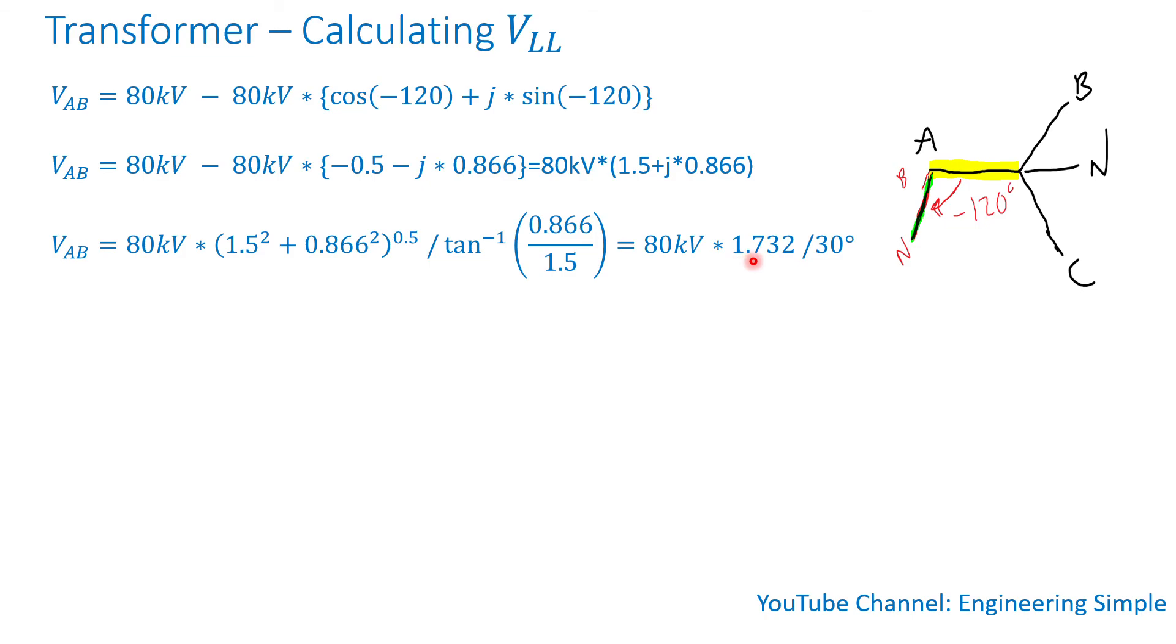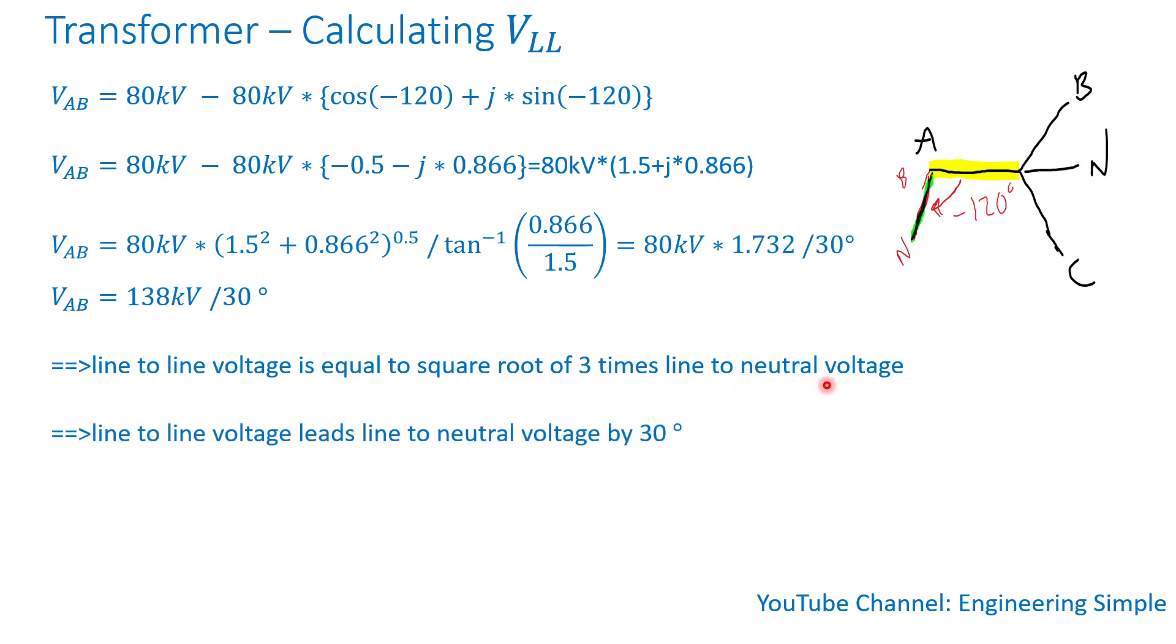So 1.732 is just square root of 3. What this is telling me is that VAB equals square root of 3 times VAN at an angle of 30 degrees. So line-to-line voltage is equal to square root of 3 times the line-to-neutral voltage, and the line-to-line voltage leads the line-to-neutral voltage by 30 degrees.